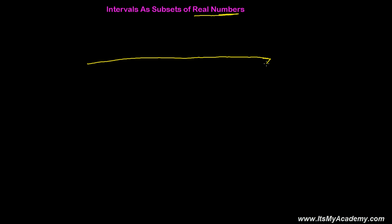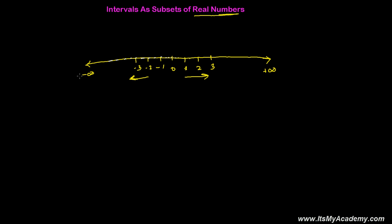On the real number line, if this is my real number line, this side represents positive infinity and this side represents negative infinity. Somewhere here is 0, then 1, 2, 3 and so on. Similarly here minus 1, minus 2, minus 3 — numbers decrease on the left side and increase on the right side. There are infinite numbers possible; for example, 1.111, 1.251 — many numbers are possible between any two points.